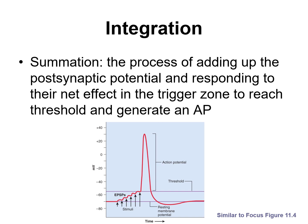So if EPSPs and IPSPs are votes on whether a postsynaptic neuron should generate an action potential, you can think of the term summation as referring to the tallying of those votes — how do these EPSPs build upon one another in order to get from the resting membrane potential all the way up to threshold so an action potential can be generated.